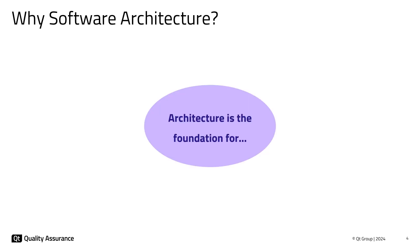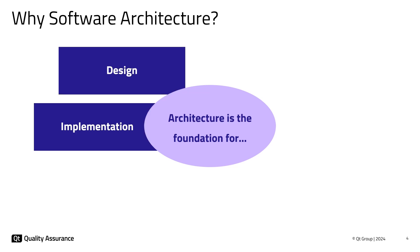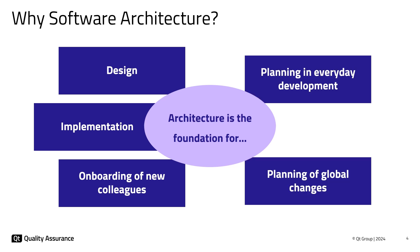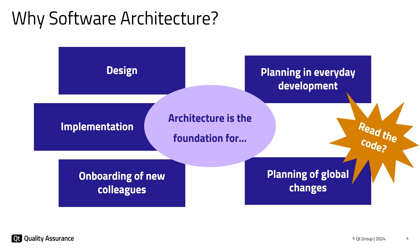Why should you maintain a software architecture? An architecture captures the essential ideas of a project with respect to design and implementation and therefore serves as an important documentation. For example, when new colleagues are joining the team, they can get an overview and get to know how the project ticks internally by looking at the architecture. It also helps with planning changes in everyday development, but also if larger changes have to take place like a refactoring of the code or adding new functionality. Otherwise, the code has to be inspected, which is very cumbersome and can be incomplete.